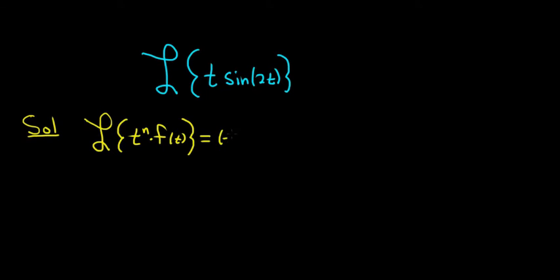It's equal to negative 1 to the n times, and then it's going to be the nth derivative of big F with respect to s. You might say, what's big F? Big F is the Laplace transform of little f. So to use this formula, you first compute the Laplace transform of little f, and then you just take the derivative however many times you need to do it.